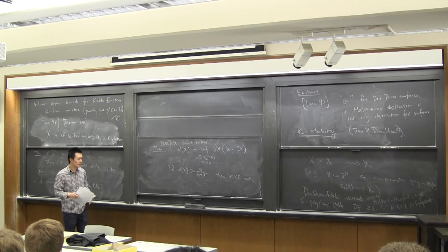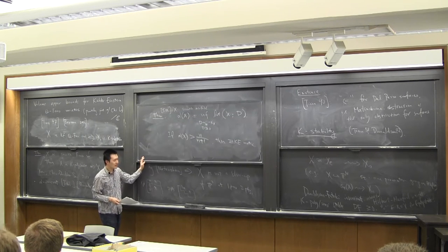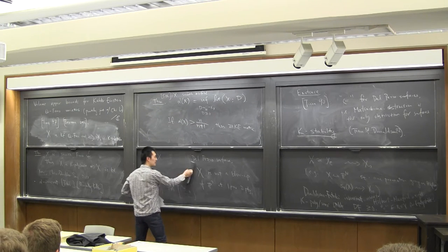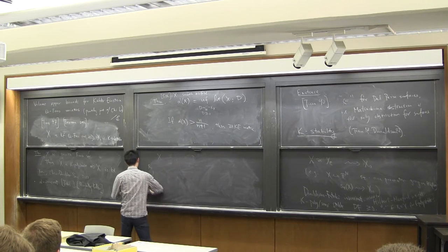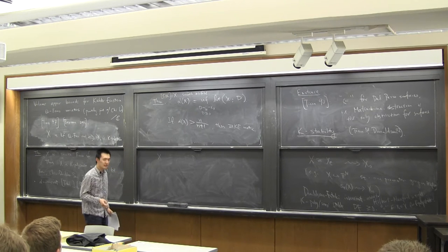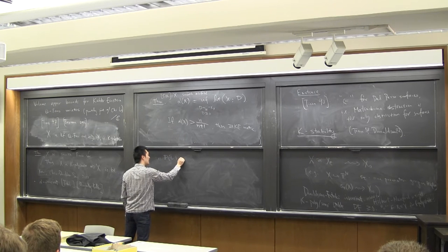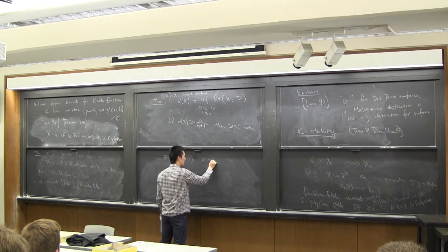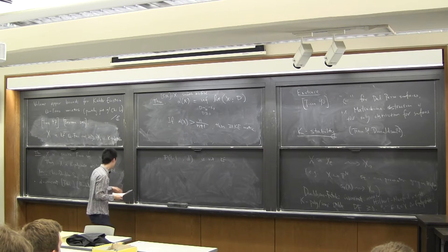We define alpha(X) to be the infimum of the log-canonical threshold of X with respect to divisors D, where D is Q-linearly equivalent to minus K_X and D is effective. The theorem states: if alpha(X) is strictly bigger than n/(n+1), then there exists a Kähler-Einstein metric. There are interesting interplays between this Kähler-Einstein condition and birational geometry via log-canonical thresholds.